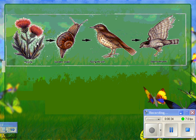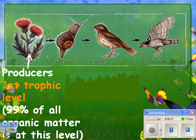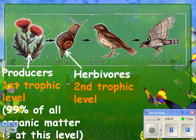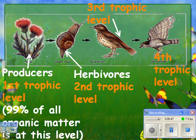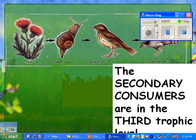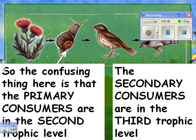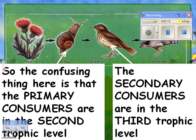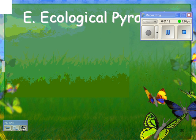For example, thistle would be an example of a producer — it's a plant — and so it's the first trophic level. 99% of all organic matter is at this level. Herbivores are the second energy level, then the third trophic level, and then the fourth. The confusing thing here is that primary consumers are in the second trophic level, and secondary consumers are in the third trophic level — so the numbering seems to go backwards.